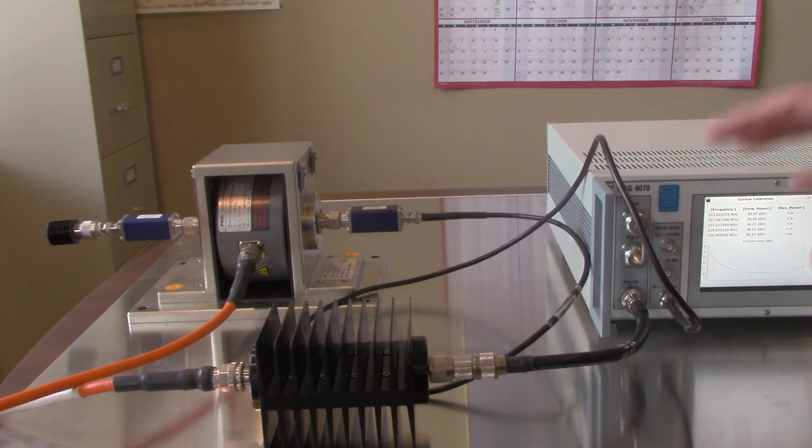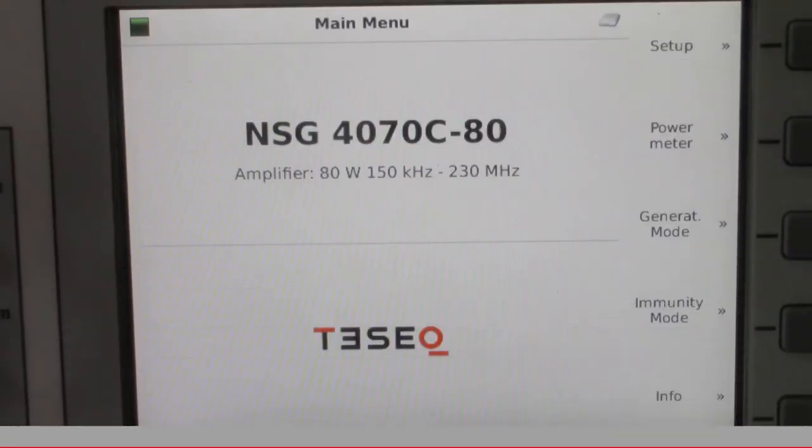Alright, so we just walked through the setup here for the calibration for IEC 61000-4-6. Let's turn on the NSG-4070 and walk through the interface as well as selecting some of the testing parameters to run the calibration itself.